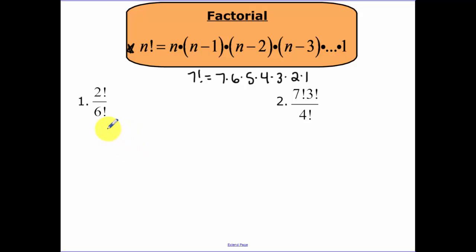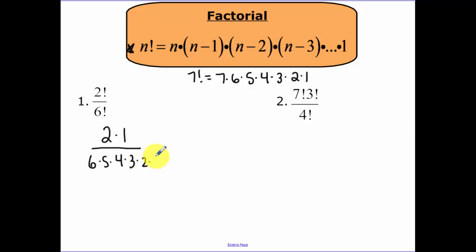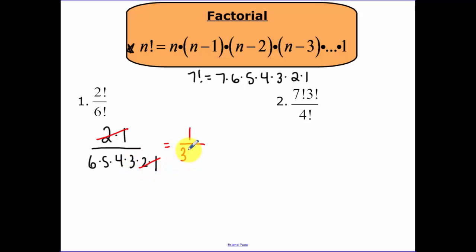Let's look at 2 factorial over 6 factorial. Two factorial is 2 times 1. Six factorial is 6 times 5 times 4 times 3 times 2 times 1. Since we're multiplying, the 2 times 1 cancels, and we're left with 1 on top and 6 times 5 times 4 times 3 on the bottom, which is 360.